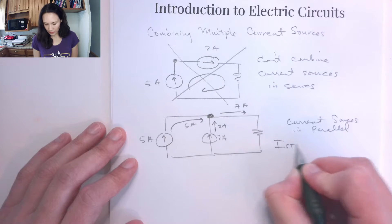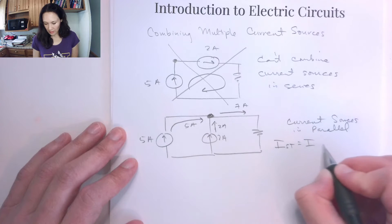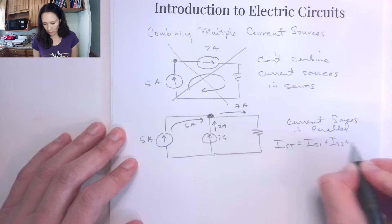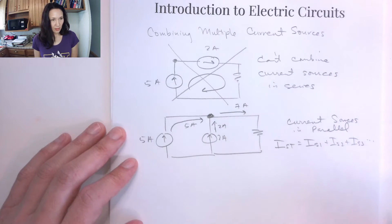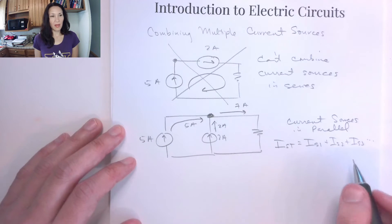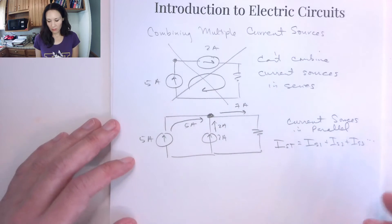So we can say I source total is just going to be the sum of I source 1 plus I source 2 plus I source 3 and so on. As long as they are in parallel, we can't combine them in series.